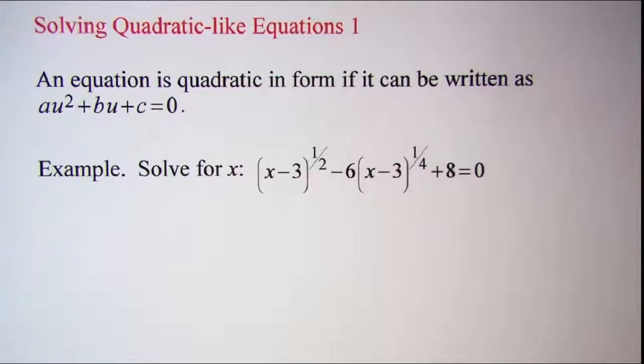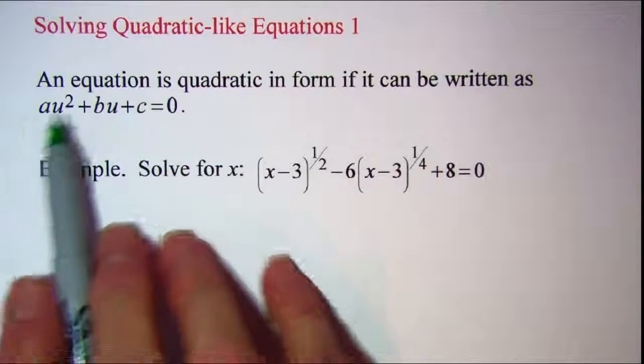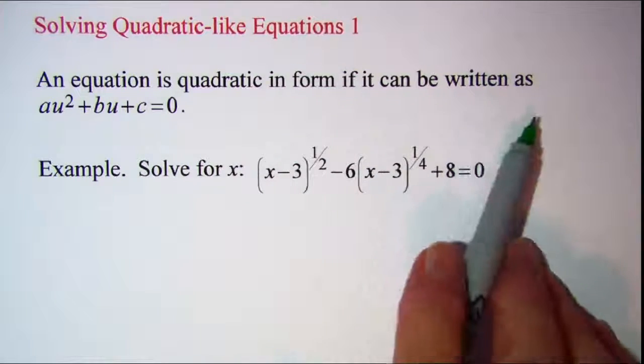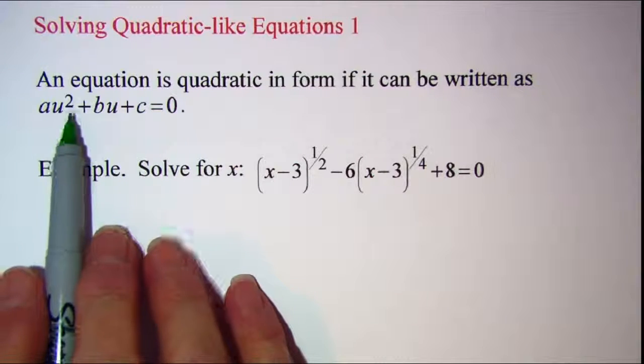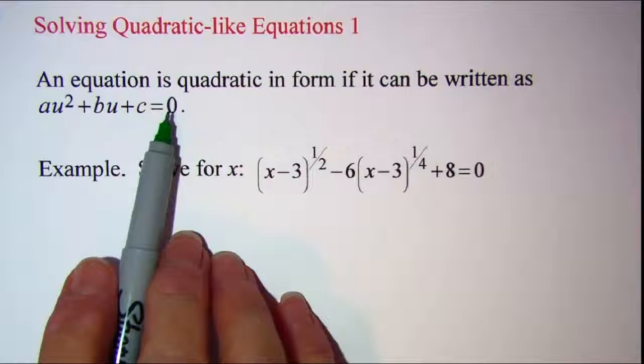In this video we'll be solving a quadratic-like equation. An equation is quadratic in form if it can be written as Au squared plus Bu plus C equals zero.